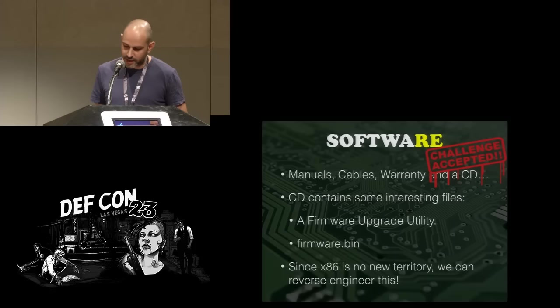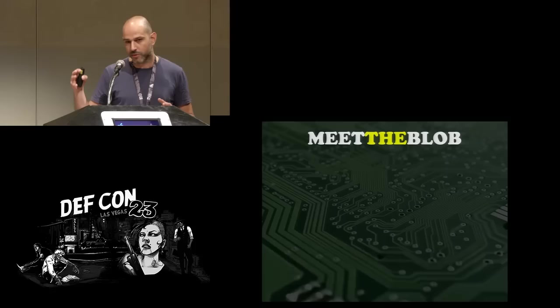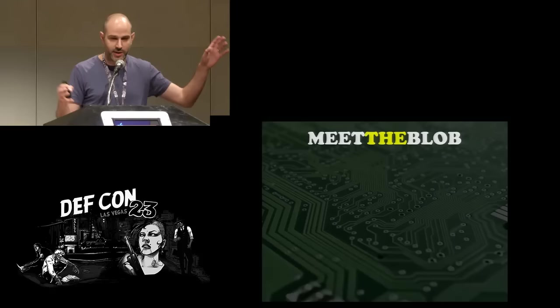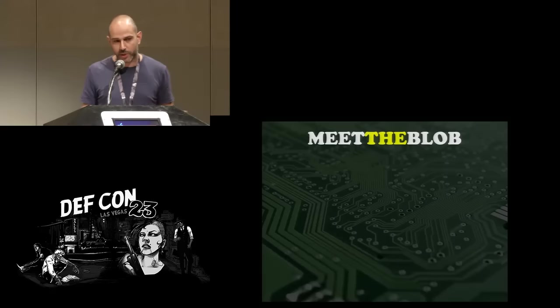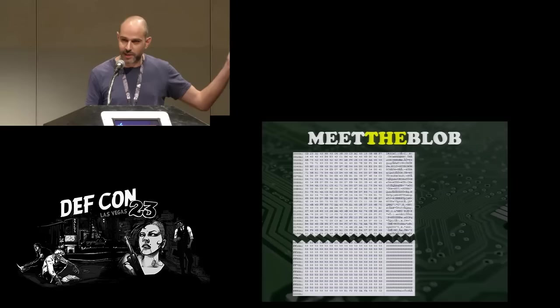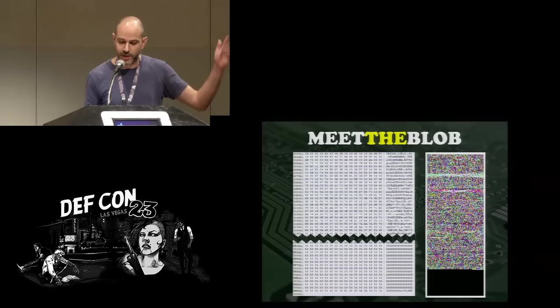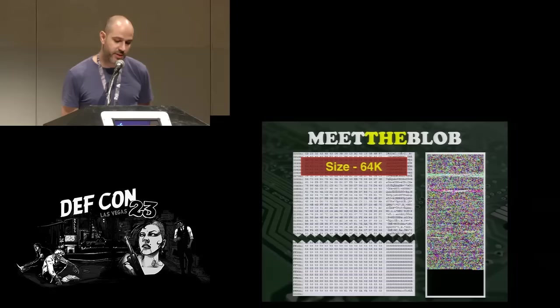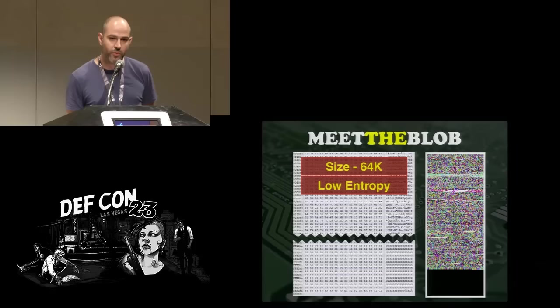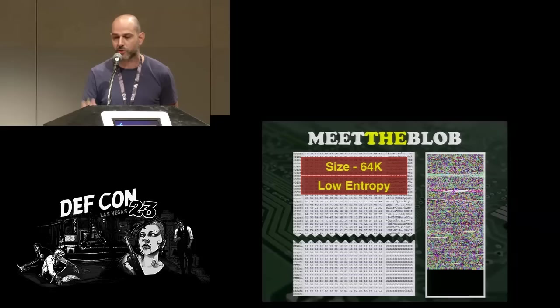When we ran it in a debugger dynamically, we quickly saw exactly what we expected: it reads the firmware.bin file, passes it to some kind of decompression function, then stores the output in some memory space. We went to this memory space and looked at what was stored there, really hoping to find our firmware. What we found was a blob — a 64K long blob. The good thing: it has a really low entropy level, meaning it's no longer compressed and probably not encrypted. But it has no strings — absolutely not even a single string, which looked a bit strange.